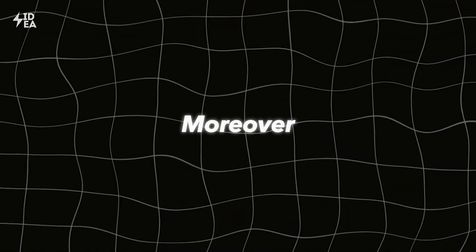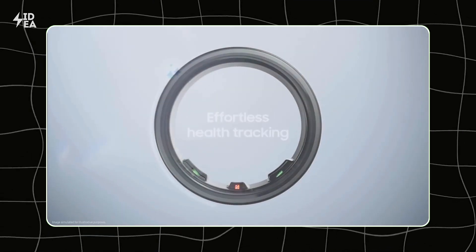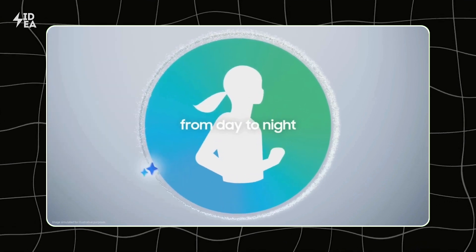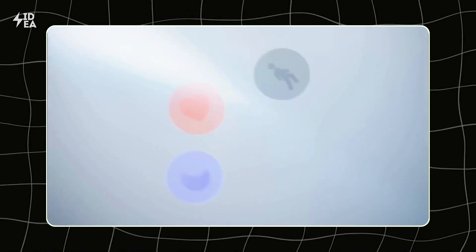Moreover, the Galaxy Ring integrates seamlessly with various health and fitness apps on your smartphone, allowing you to consolidate and analyze your health data in one place. This integration makes it easy to track your progress and achieve your health goals more effectively.